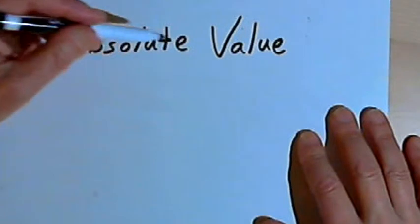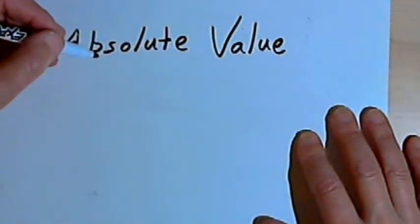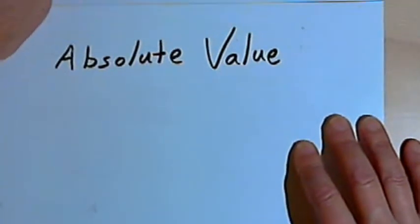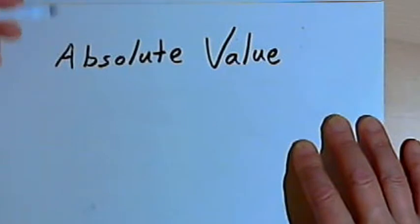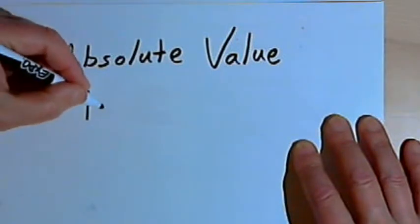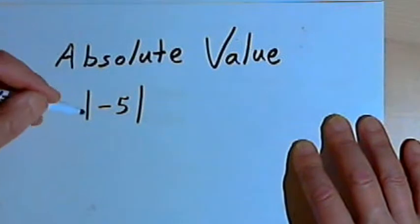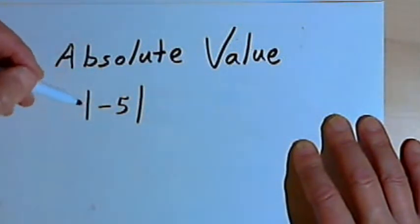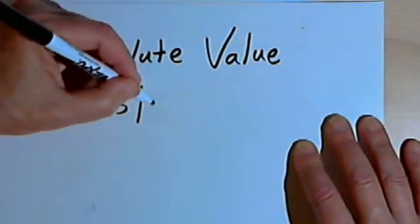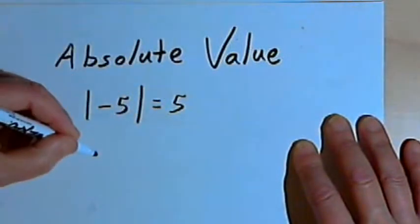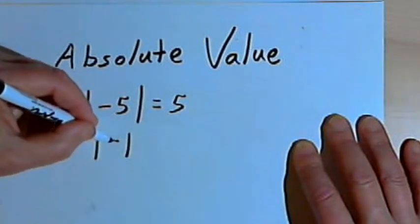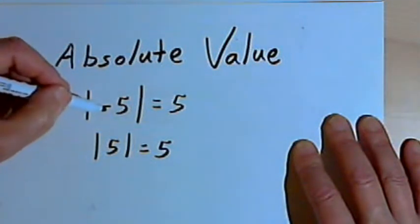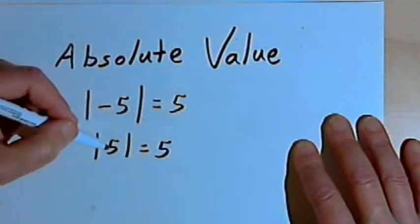Just to remind you about absolute value: the absolute value of a number is the value of the number regardless of whether it was originally positive or negative. So the absolute value of negative 5 — using absolute value notation, two vertical bars with negative 5 in between — is 5. And the absolute value of positive 5 is also 5. In other words, we're taking the value of the number regardless of whether it was originally positive or negative.